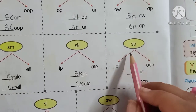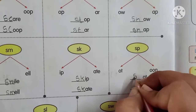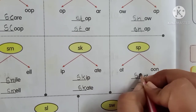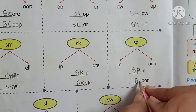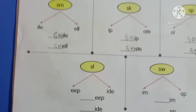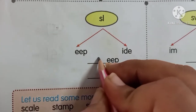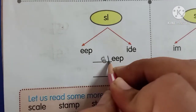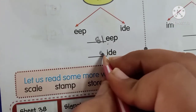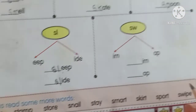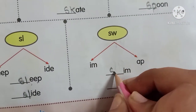Kids, now next. S, P — spoon. Now next. S, L — slip. S, W, I, M — swim.